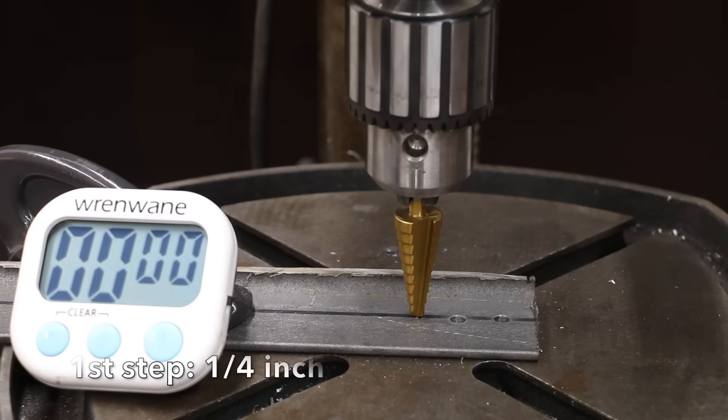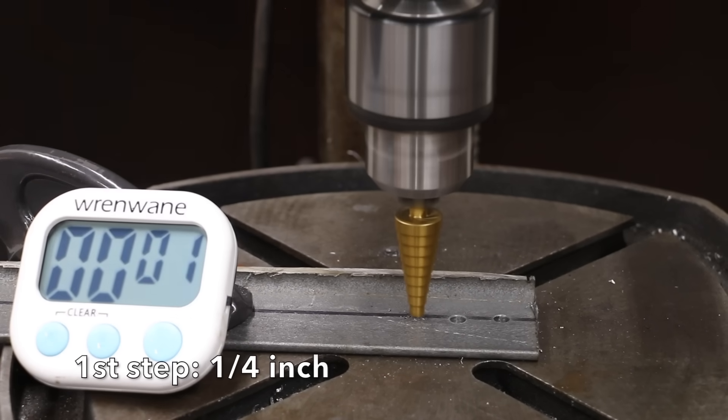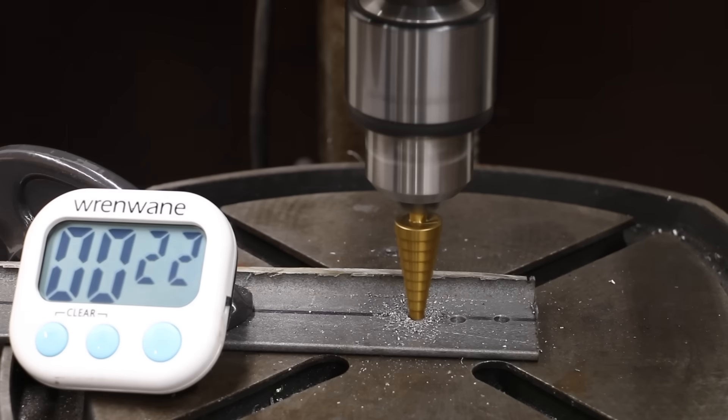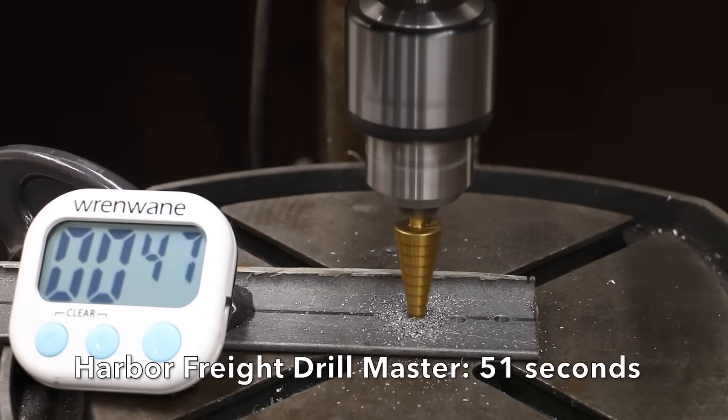Testing Harbor Freight Drill Master. Compared to the 9 second Dewalt, the Harbor Freight Step Bit really struggled taking 51 seconds to penetrate the quarter-inch mild steel.